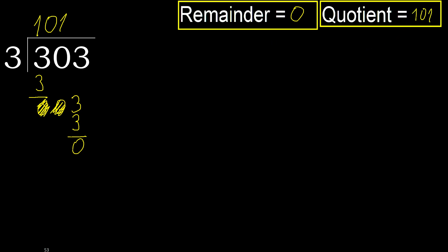Okay. 303 divided by 3 is 101. Okay, alright.